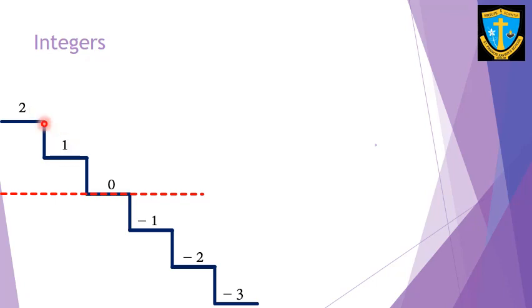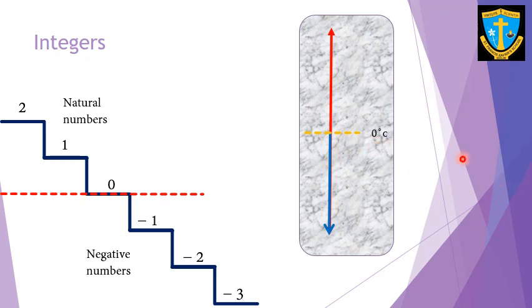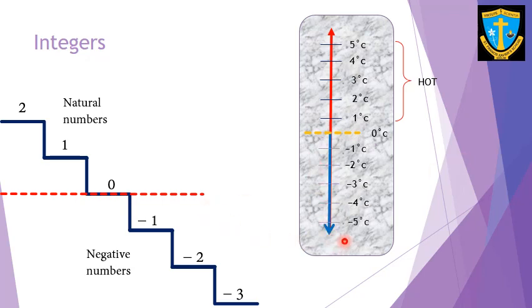Let us look at one more example of integers — the thermometer. Zero degrees Celsius is the middlemost point. Above it is the warm or hotter portion, and below it is the colder region. As the temperature drops down we use a negative sign, but as the temperature rises we use positive numbers.